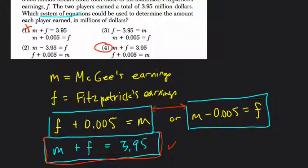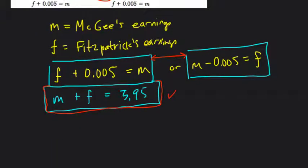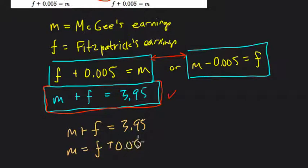Now, if you wanted to solve this, let's just take a look at this really quickly. If you want to figure out what they're earning, let's just do that for fun. We know this is true. If we add up, we get $3.95. And we know that M is the same thing as Fitzpatrick's plus $0.005. We use what's called substitution. So if M is equal to F plus 0.005, I plug that in here for M.